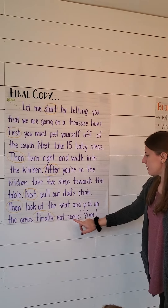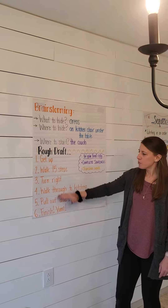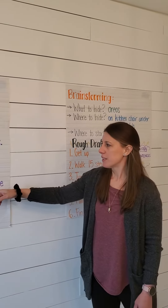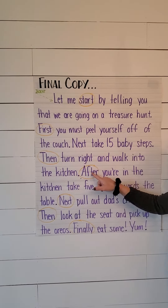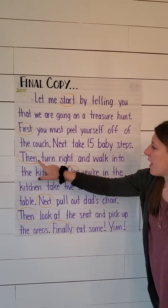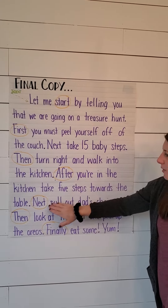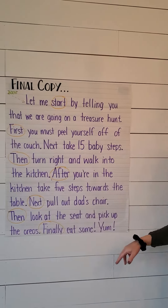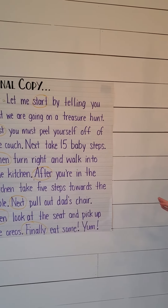Then, look at the seat and pick up the Oreos. Finally, eat some. So if you look at my rough draft, I had most of those steps there, then I just turned them into longer sentences. You can see I used different transition words each time — I didn't use 'then, then, then' all in a row. I used 'then,' 'after,' 'next,' and then came back to 'then.' You have to use a bunch of different transition words so your writing is more interesting.